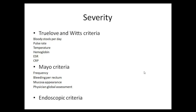Knowing the severity at earliest presentation is important because first-line management is medical for two to three days, after which the patient is reassessed for improvement. Truelove and Witts criteria allows easy bedside assessment of whether the patient is improving, stagnant, or deteriorating despite medical management. Many gastroenterology centers dealing with acute ulcerative colitis still follow Truelove and Witts criteria.